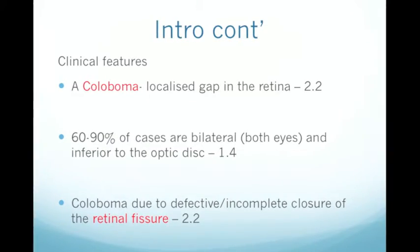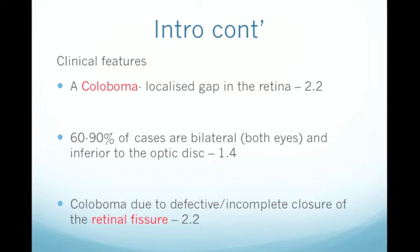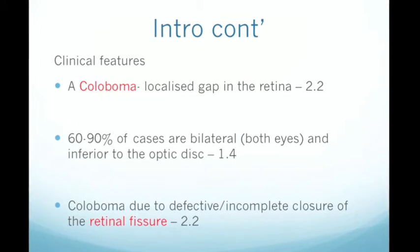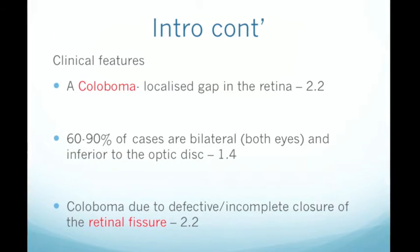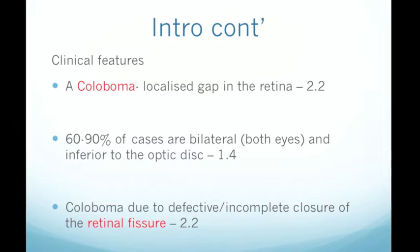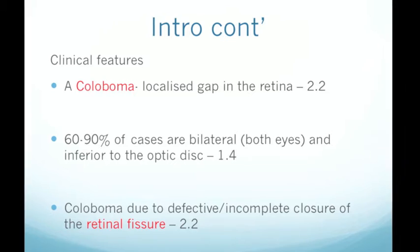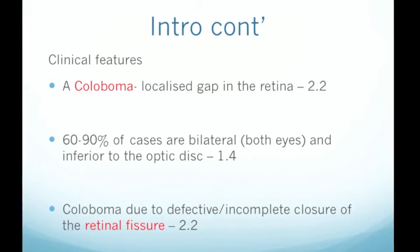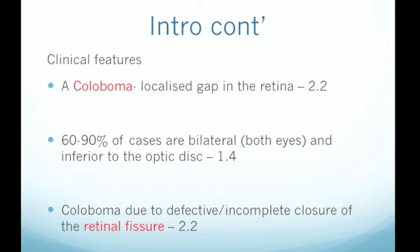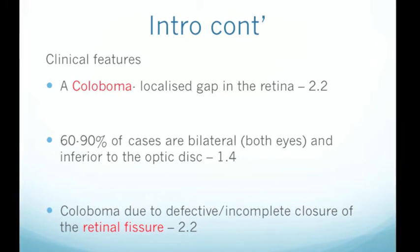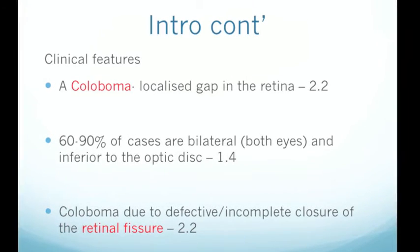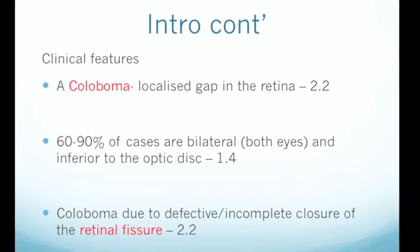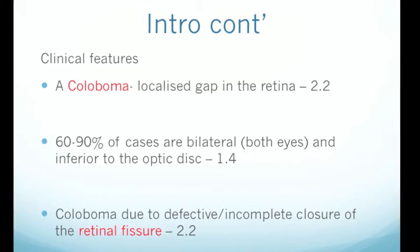Let's now look at the clinical features of a coloboma, which is essentially an absence of tissue — a localised gap in the retina. 60 to 90% of cases are bilateral, meaning the issue occurs in both eyes, and inferior to the optic disc. We see coloboma due to defective, incomplete closure of the retinal fissure, something we'll explore in both normal and abnormal development.